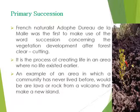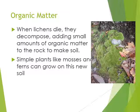An example of an area in which a community has never lived before would be lava or rock from a volcano. In the case of primary succession, because there was no pre-existing community or mode of nutrition in that particular place, primary succession begins with the colonization of an area that has not been previously occupied by any ecological community, such as newly exposed rock, sand surface, lava, or newly exposed glacial tills.